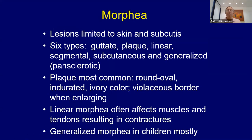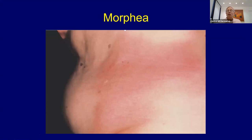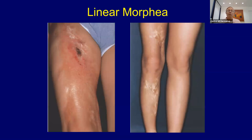Morphea involves the skin and subcutaneous fat. There are six general types. Plaque type is probably the most common; early on they can have a more violaceous color. You can get linear morphea and generalized morphea. We see a lot of these submitted to us as rule-out mycosis fungoides. It's a somewhat pinkish, violaceous lesion on the trunk — a classic location. Early on they may not have a lot of firmness, so they can be confused with MF. Usually not scaly, though there can sometimes be lichen and morphea together where there can be some scale.